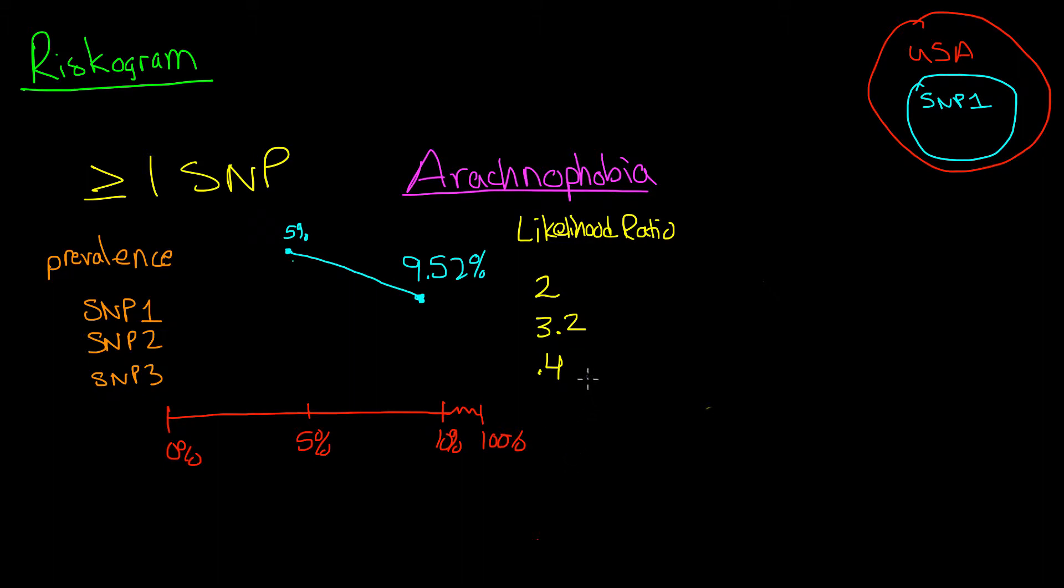Now we need to do the same thing that we did last time by calculating this blue number, that percentage. Last time we had to convert the prevalence into a ratio. And then after we converted it into a ratio, we could multiply that ratio by the likelihood ratio, which was 2.